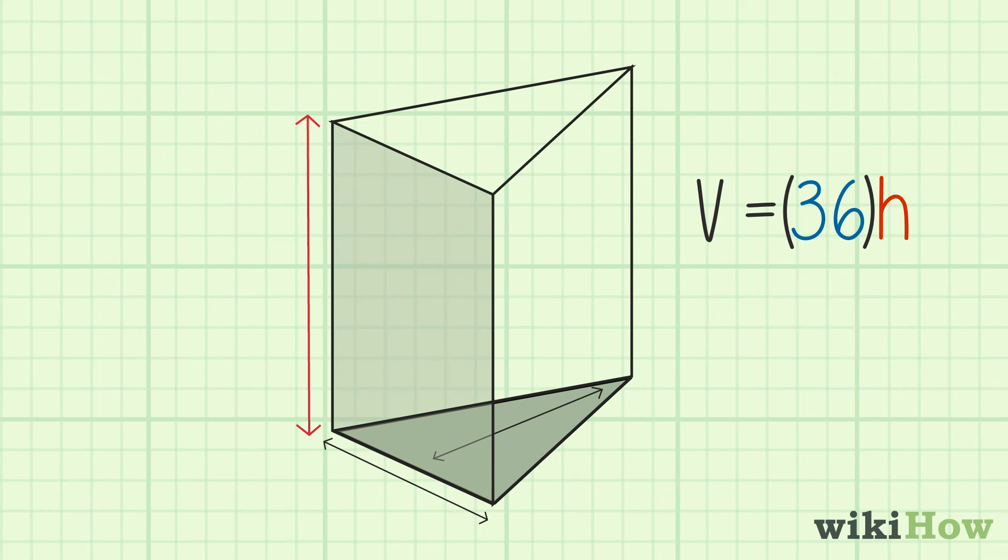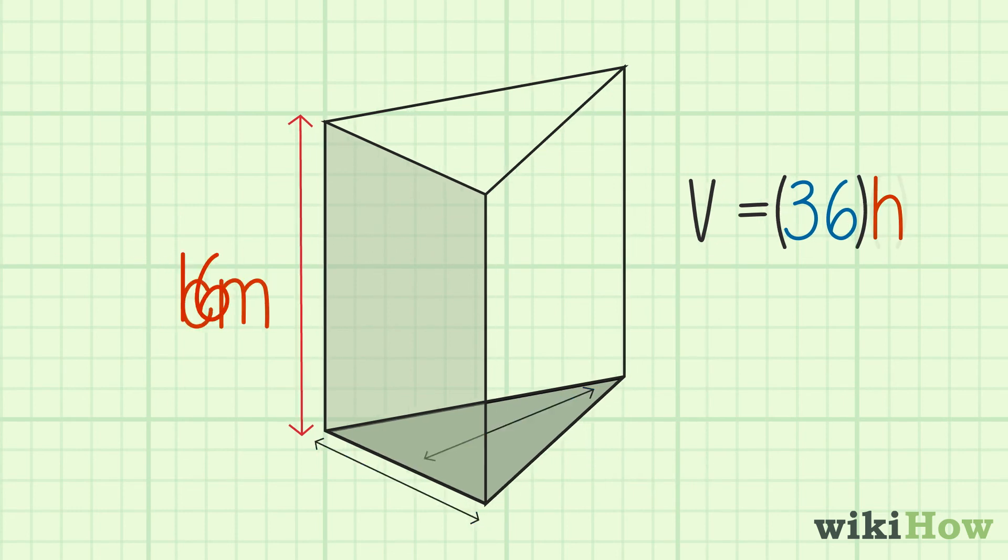Now plug the height of the prism into the formula and solve. As an example, if the area of the triangular base is 36 and the height of the prism is 16, you would get 36 times 16 equals 576.